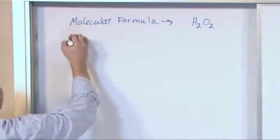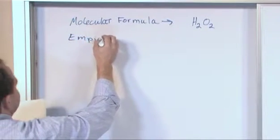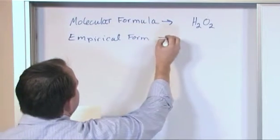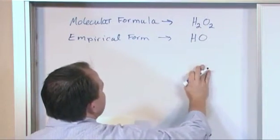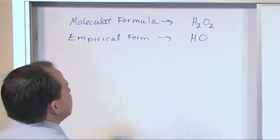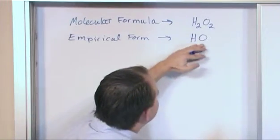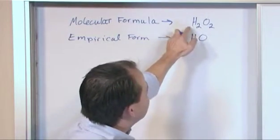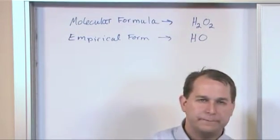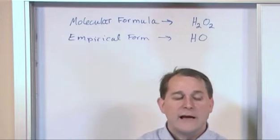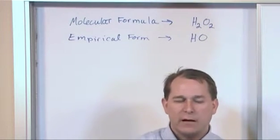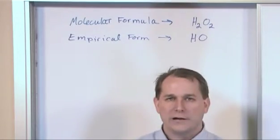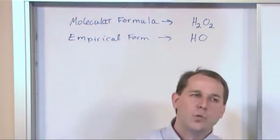But the empirical formula would not be H2O2, it would just be HO. Okay, so the empirical formula is basically the smallest ratio of the atoms in there. So you see here I have H2O2. So what this basically says is that for every two atoms of hydrogen, I have two atoms of oxygen. And that's what's really bound in the molecule. But ratio-wise, 2 to 2, which means 2 hydrogen to 2 oxygen, is really the same ratio as 1 to 1.